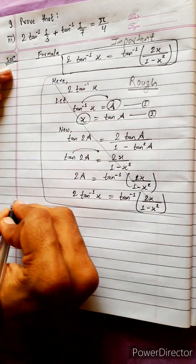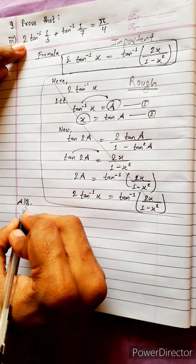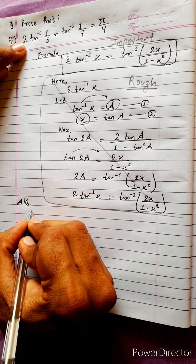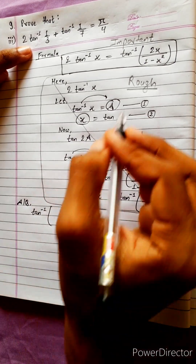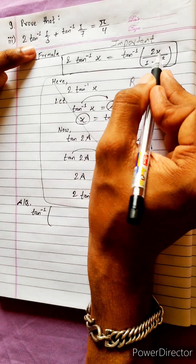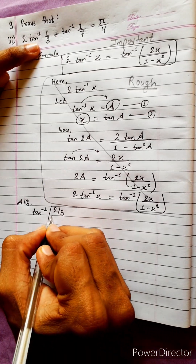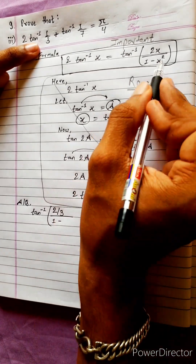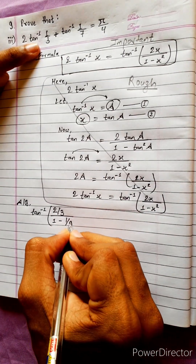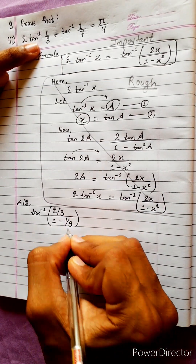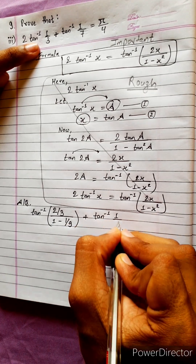According to the question: 2·tan⁻¹(x) equals tan⁻¹(2x upon 1 minus x squared). With x equals 1/3, we get 1 minus x squared equals 1 minus 1/9. This gives x equals tan⁻¹(2x) and x equals tan⁻¹(1/7).